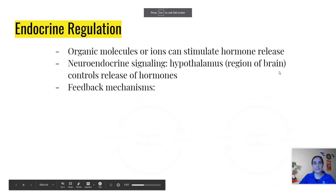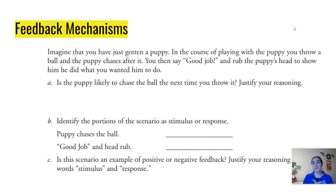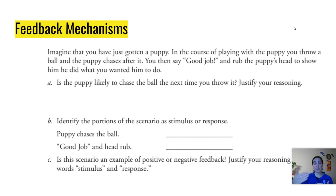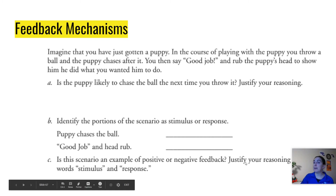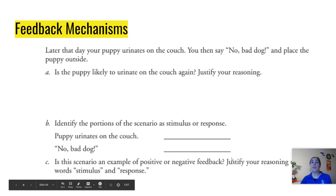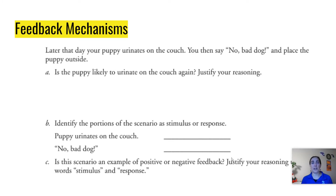These examples are just to get you thinking about the idea. If you throw a ball, a puppy chases it, and you rub its head and say good job — most likely the next time the puppy's going to chase the ball again. The stimulus was the puppy going to get the ball, and the response of praising the puppy increases the likelihood of it happening again. That's positive feedback — not because you said something positive, but because it increases the stimulus. However, if your puppy pees on the couch and you say no, bad dog, that decreases the likelihood of it happening again. That's negative feedback — not because you're being negative, but because it decreases the likelihood of the behavior.